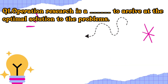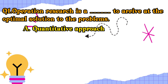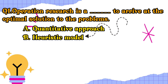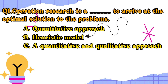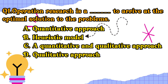Q1. Operations researchers say to arrive at the optimal solution to the problems: A. Quantitative Approach. B. Heuristic Model. C. A Quantitative and Qualitative Approach. D. Qualitative Approach.